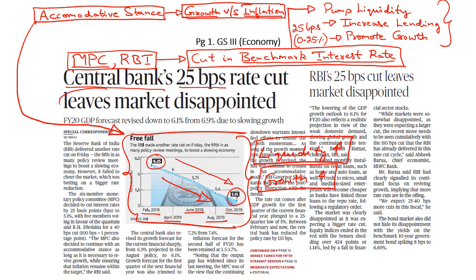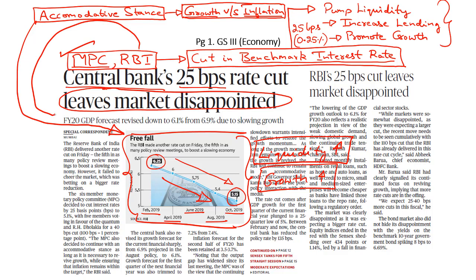However, the markets are not happy with the rate cut announced by the Monetary Policy Committee because they were expecting higher rate cuts considering the economic crisis India is going through. The economic slowdown is evident from the RBI revising its GDP forecast for the current financial year from 6.9% to 6.1%. The markets feel that a reduction of just 0.25% in the repo rate won't be sufficient to revive economic growth.